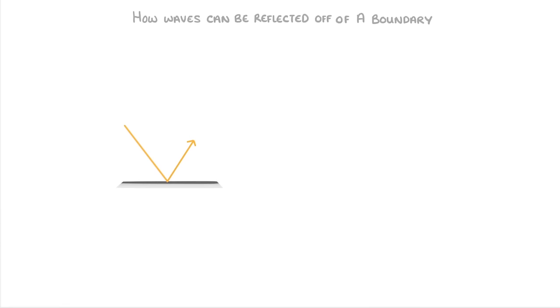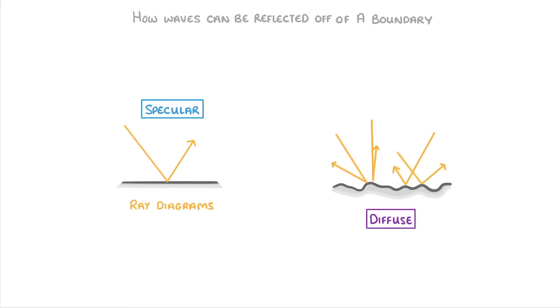In today's video, we're looking at how waves can be reflected off a boundary. And in doing so, we'll cover how to draw ray diagrams and the different types of reflection, including specular and diffuse.